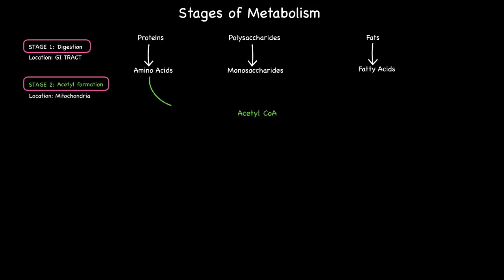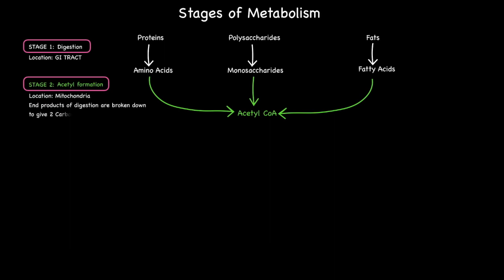Here, the end products of digestion are further broken down, eventuating in the production of a common intermediate of the metabolism known as acetyl-CoA, and this occurs within the mitochondria of cells.